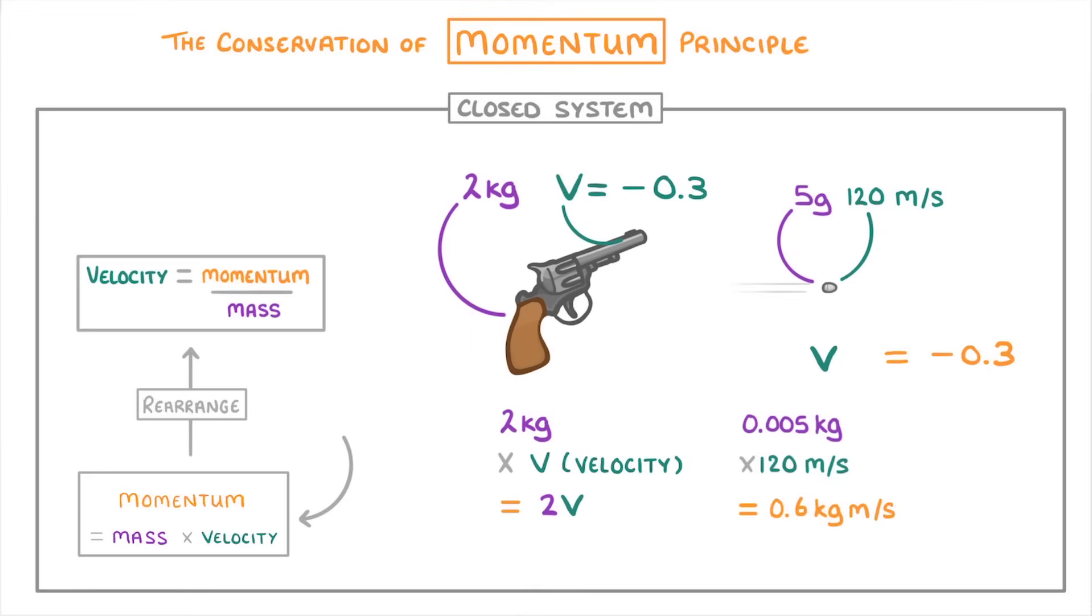And remember, the fact that it's negative means that it's effectively going backwards. Or in other words, it's going in the opposite direction to the bullet.